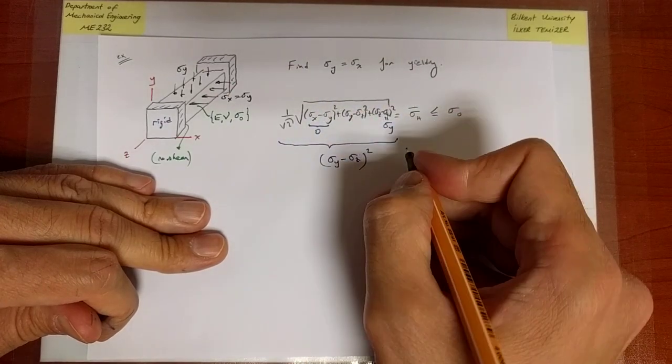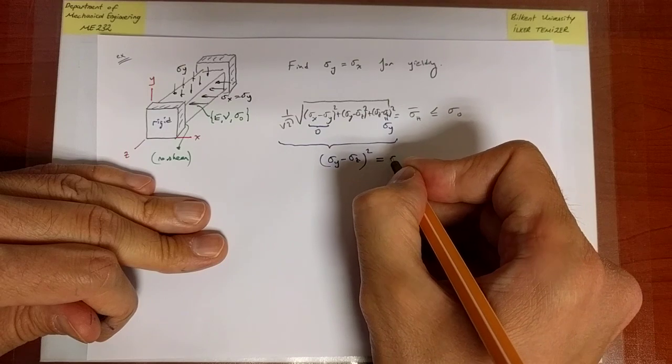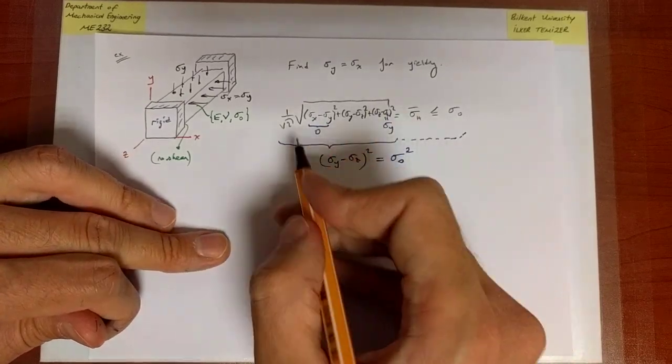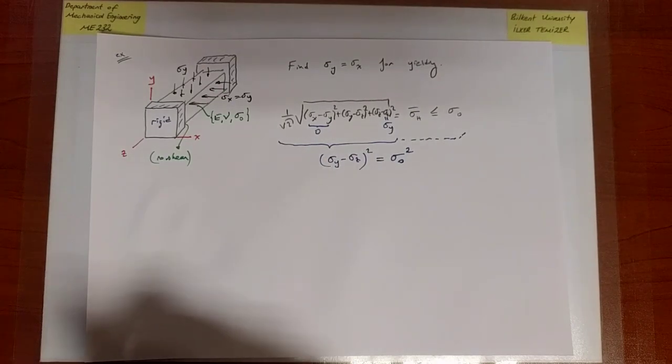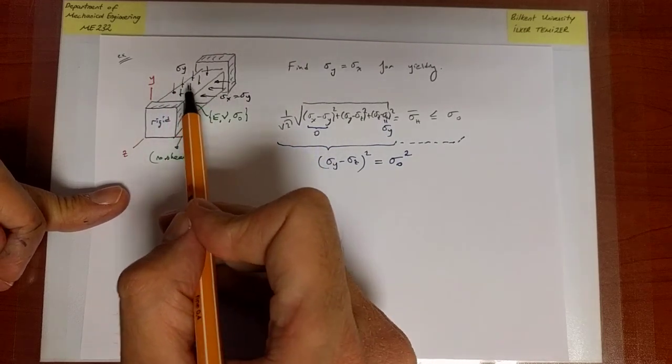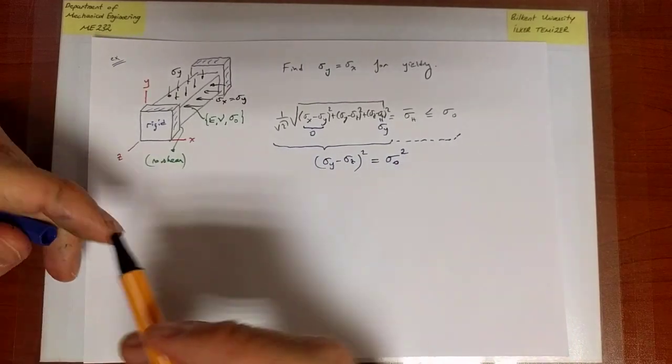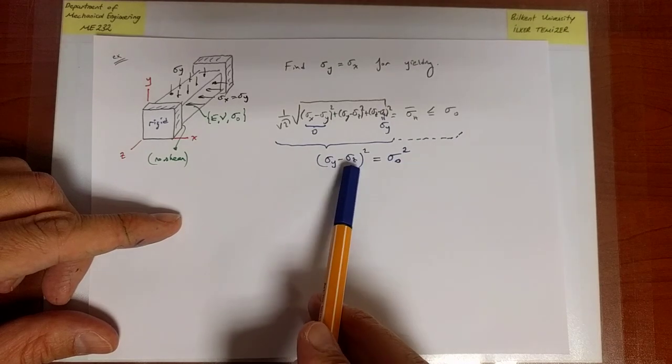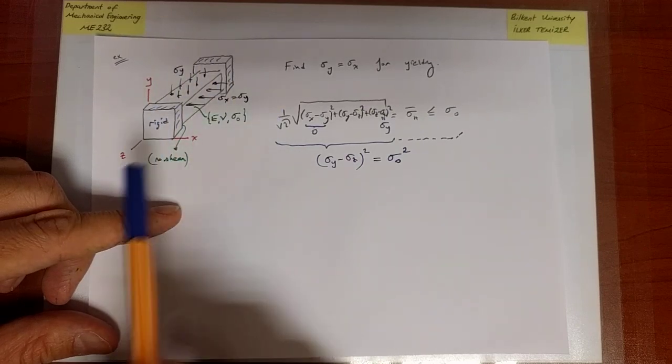Now, I start loading, and I increase sigma_x and sigma_y proportionally, they are equal, I keep compressing, and I want to find out when failure occurs. In other words, what's the value of sigma_y in terms of sigma_0 at which failure occurs? But I don't know what sigma_z is. So I need to have some information about how sigma_z also proportionally increases during this loading as a function of sigma_y, depending on the elastic behavior. Where does that information come from? This one you should be able to answer very quickly.